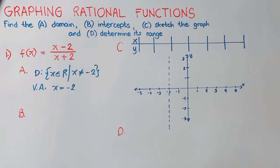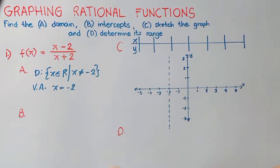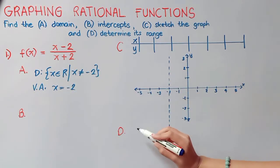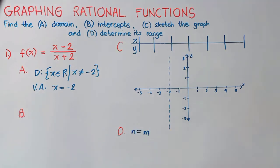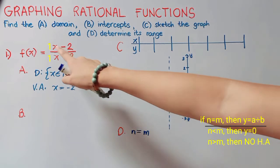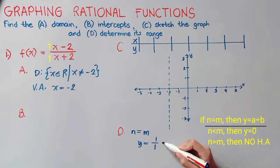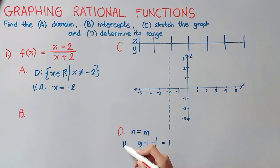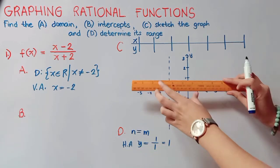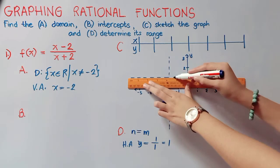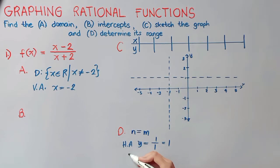Since we already have our domain, let us get our range. To get our range, we have to look at the degree of our polynomial equation in the numerator and denominator. Our highest exponent is the degree of polynomial — in the numerator we have 1, and in the denominator we have 1. Therefore n is equal to m, where n is the degree of the numerator and m the degree of the denominator. If both degrees are equal, we divide our leading coefficients, so y equals 1 over 1, which equals 1. Therefore this is our horizontal asymptote, and our range is y is an element of real numbers such that y is not equal to 1.